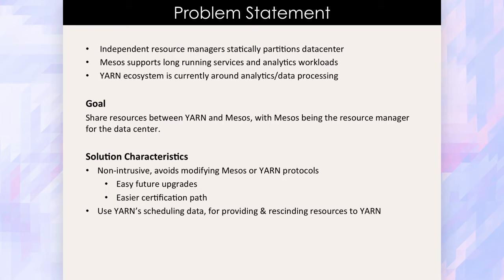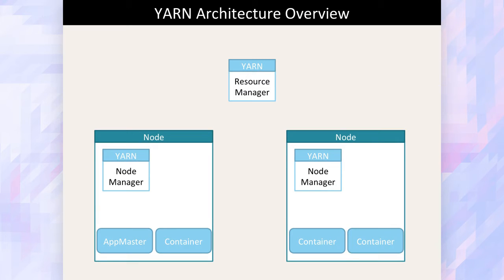Before we look into the solution, I'll quickly give an overview of the Yarn architecture. Yarn has something called a resource manager — it's similar to a Mesos master. It also has a node manager, similar to a Mesos slave, which advertises the resources of the node and executes tasks on it. And it has an app master, which is similar to a Mesos framework.